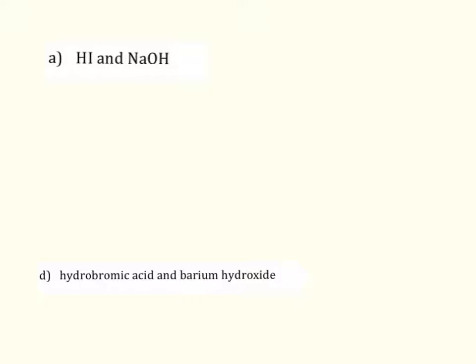Alright, so for some examples, I've got hydroiodic acid reacting with sodium hydroxide. So we've got the acid right here, and the base, and I'm going to write it out like this. Okay, and so to determine what we're going to make, I've got H from here and OH from there. So that's going to make one water.